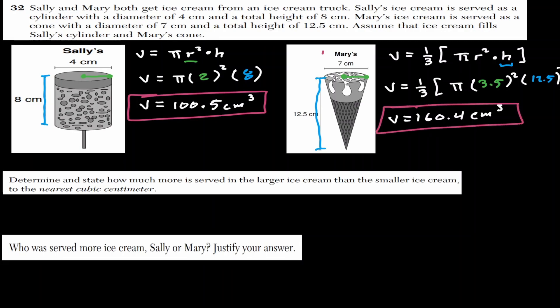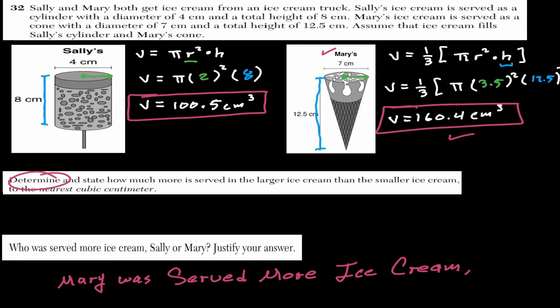When we compare both ice creams, it is clear that Mary got more ice cream: 160.4 is greater than 100.5. Mary's cone served more ice cream, and the difference is 160.4 minus 100.5, which gives approximately 60 cubic centimeters more.